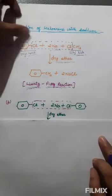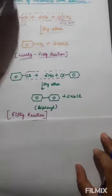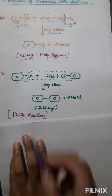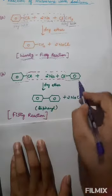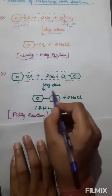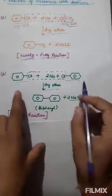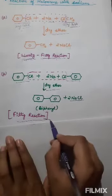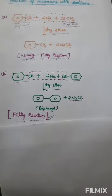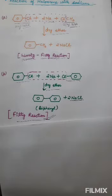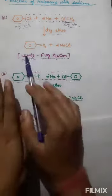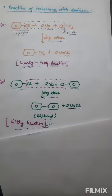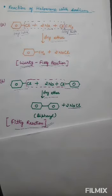In the Fittig reaction, only aryl halide compounds are used. Chlorobenzene reacts with 2Na and another mole of chlorobenzene in the presence of dry ether — the two rings combine and biphenyl is formed, with removal of NaCl. So: Fittig reaction uses aryl halide only; Wurtz reaction uses alkyl halide only; Wurtz-Fittig uses both aryl halide and alkyl halide with sodium.